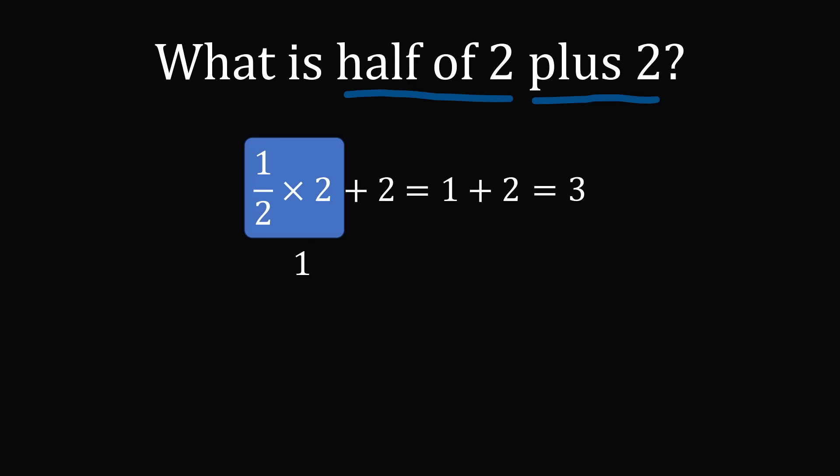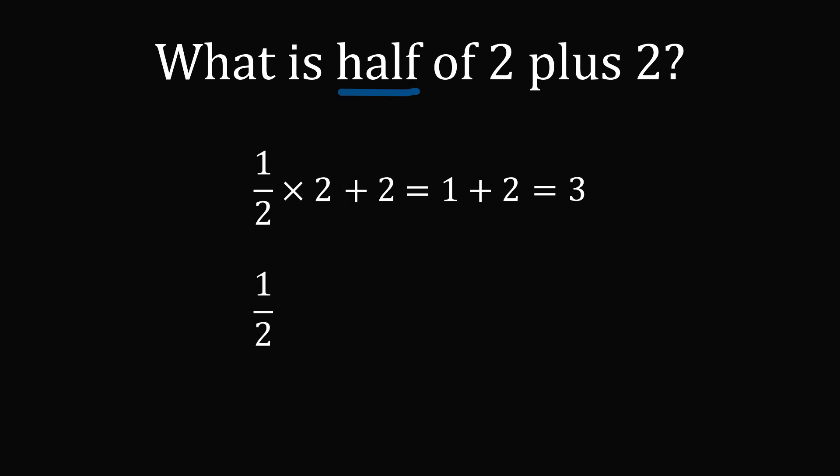But not everyone has this interpretation of the question. Some people translate the question as follows. They translate half into 1 half, and then they say this is half of 2 plus 2. So we need to multiply this by the quantity 2 plus 2. We need to add 2 and 2 together first, that's a grouping, that will be equal to 4. And then 1 half of 4 is definitely equal to 2.